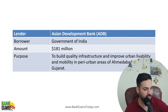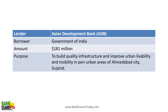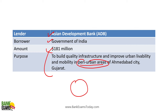The government of India is the borrower. The lender is Asian Development Bank (ADB), providing a 181 million dollar loan to build quality infrastructure and improve urban livability and mobility in peri-urban areas of Ahmedabad city. Peri-urban areas are new colonies developed outside the municipal limit of the city — at the outskirts of urban areas, distinct from rural areas.